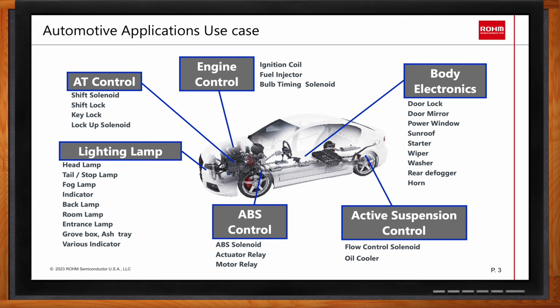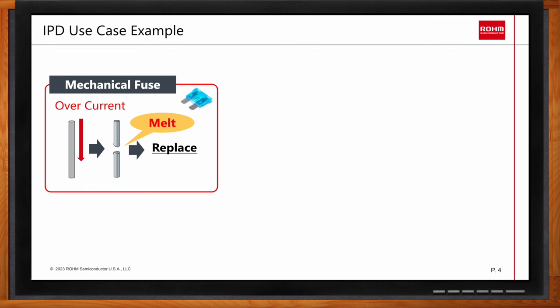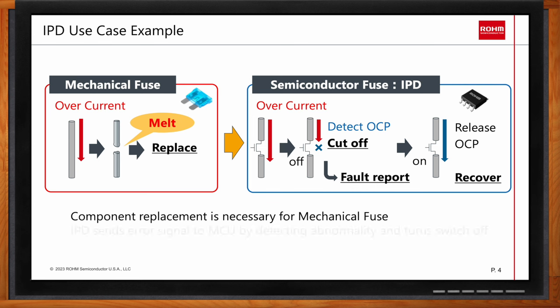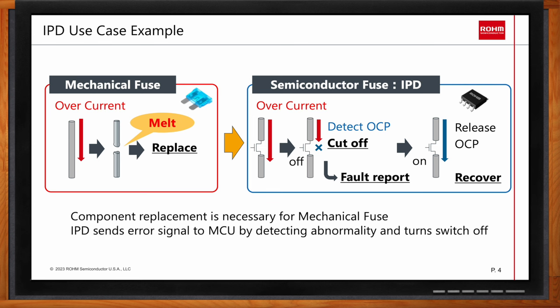Mechanical fuses protect loads from overcurrent, but they blow if current exceeds their rated limit, and although blown fuses can be replaced, it takes extra time and cost. If replaced with an IPD, the overcurrent protection circuit prevents the flow of current when exceeding the rated value and turns off the power switch, making it possible to protect both the load and the IPD itself. The IPD also includes a function that notifies the MCU of overcurrent detection with an error flag, allowing the MCU to perform necessary controls.